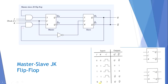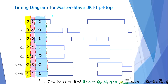Looking at the timing diagram for the master-slave JK flip-flop: when J=K=0 and the clock pulse is 0, the output is Q=0 and Q̄=1, and the same appears at the slave output. When J=1 and K=0 with clock=0, the output remains Q=0 and Q̄=1 — the slave output also stays at 0 and 1.